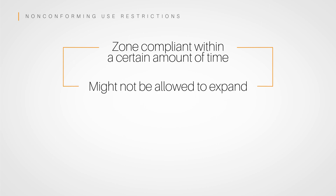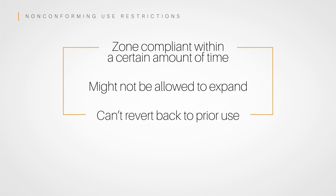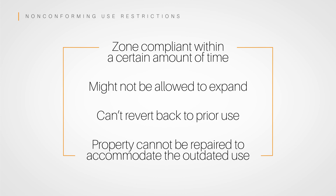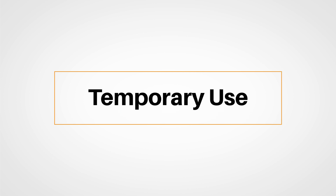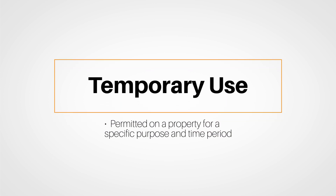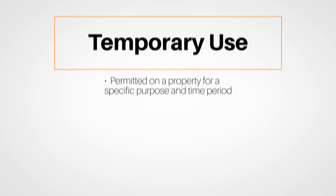For non-conforming use, the property may not be allowed to expand. The property can't revert back to prior use if the status changes, and if the property is damaged beyond a certain point, it may not be repaired to accommodate the outdated use. Finally, temporary use is permitted on a property for a specific purpose and usually for a specific time period. This would be for events like street fairs or parades. It's always best to know your local zoning regulations and have a solid understanding of them.